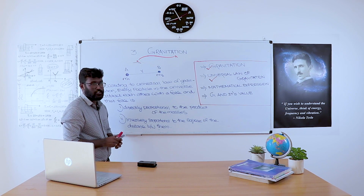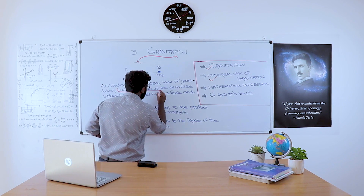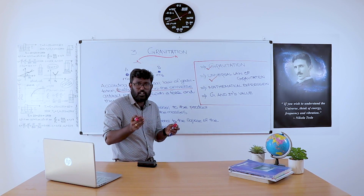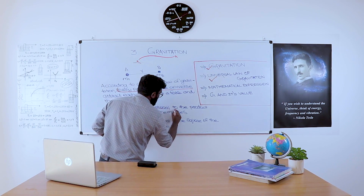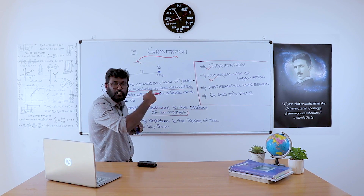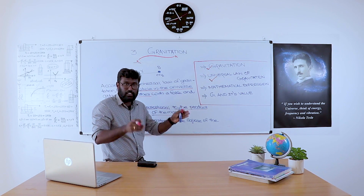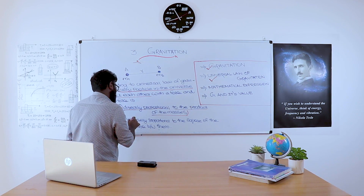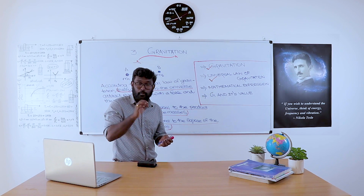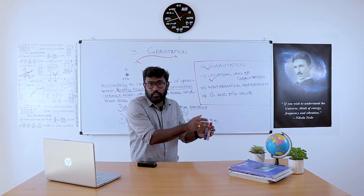So, according to the Universal Law of Gravitation, every particle in the universe attracts each other with a force. That force is directly proportional to the product of the masses — whatever two particles attract in the universe, the force of attraction between them is directly proportional to the product of their masses. That force is also inversely proportional to the square of the distance between them. Not just the distance — it is the square of the distance. That is an important thing.